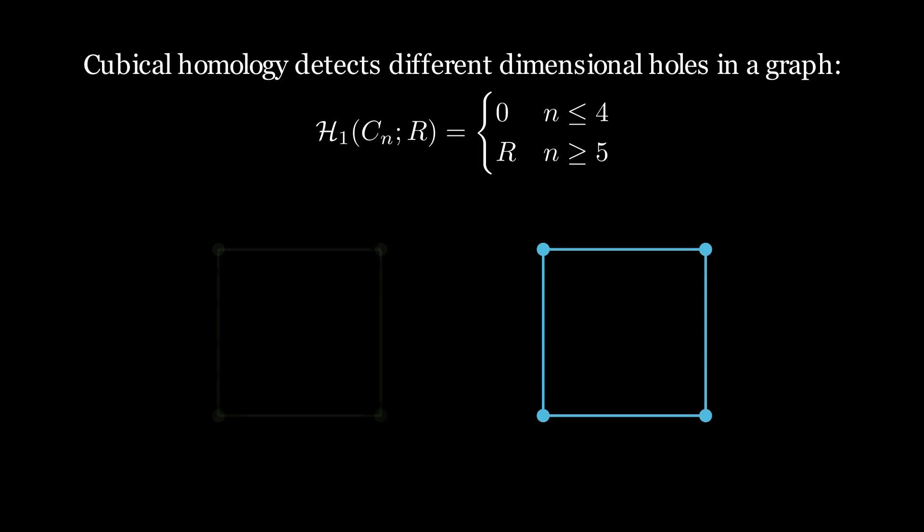Informally, the way you can see why this goes on is if you take, say, the 4 cycle, there's going to be a cycle in H1 given by the sum of all of the edges. However, this is going to be seen in the image of the boundary of a 2 cube because we have this identity map from the 2 cube into the 4 cycle. So this cycle given by the sum of all the edges ends up being killed by that boundary.